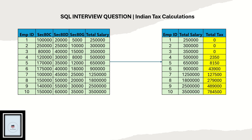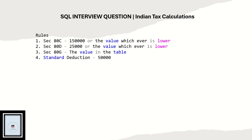Let us understand the rules to calculate the total tax to be paid. Section 80C should be 150,000 or the value whichever is lower — if you have 180,000 in section 80C, only 150,000 is deducted because that is the maximum limit. Similarly for 80D, 25,000 is the maximum limit. Section 80G does not have any limit, so whatever value you have in the table will be considered. Standard deduction is 50,000.